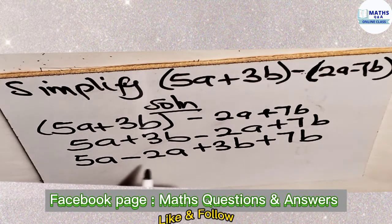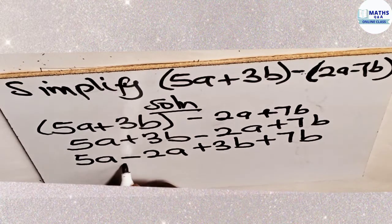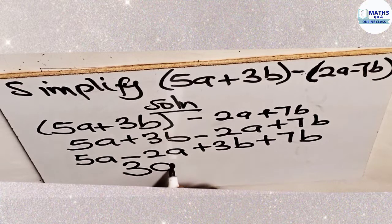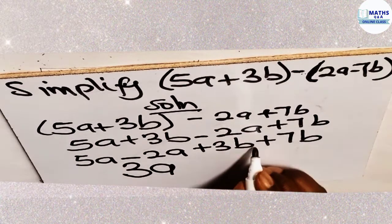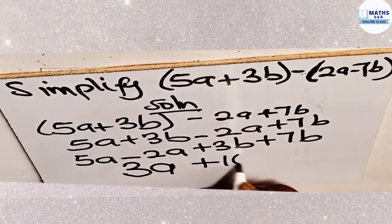Now, 5a subtract 2a from it, you get 3a. And then we have 3b. You add 7b to it. You get 10b.